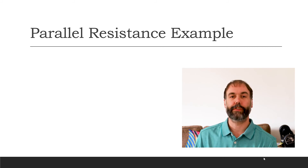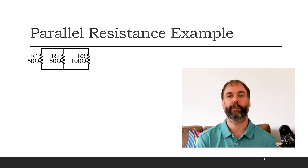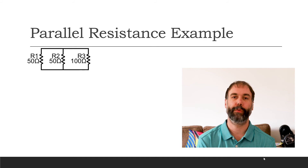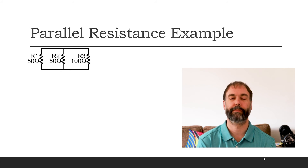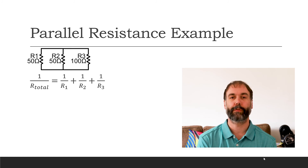So let's use this parallel resistance formula on an example circuit. Imagine you had a circuit with three resistors in parallel: a 50 ohm, 50 ohm, and a 100 ohm, and you want to know the equivalent resistance for this circuit — in other words, if you put a meter to this circuit with one lead to the top and one lead to the bottom, how much resistance would that meter measure? The parallel resistance formula says that one over R-total equals one over R1 plus one over R2 plus one over R3.